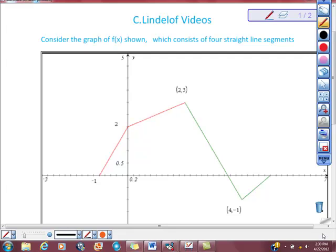Consider the graph of f of x shown, which consists of four straight line segments. Hopefully you can see those line segments. Here's one of them right here. The other one is the green one here. And hopefully you can see this one also, and that would be this one right here. So we have one, two, three, four segments.